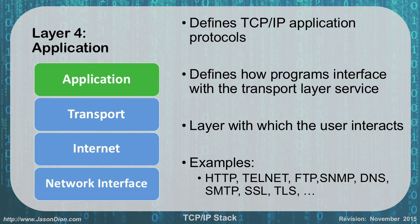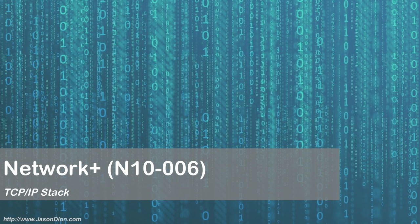Really, if you understand the OSI model, it's pretty easy to understand TCP/IP. You just have to remember that the bottom two layers squish together, the top three layers squish together, and that becomes your four layers. And that is your TCP/IP stack.